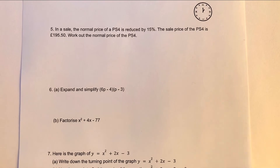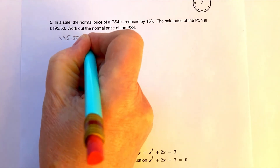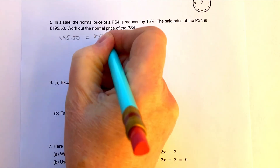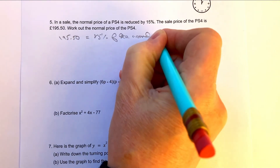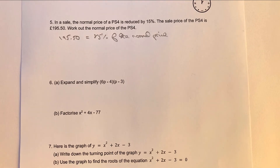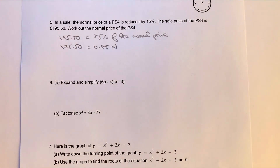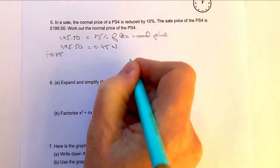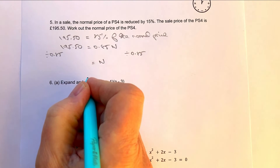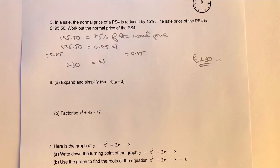Let's move on to question number five — enormously popular reverse percentages. The sale price is £195.50, which equals 85% of the normal price, because there's a reduction of 15%. Converting to decimals: 195.50 equals 0.85N. Dividing both sides by 0.85 gives N equals 230. So the normal price of the PS4 must be £230.